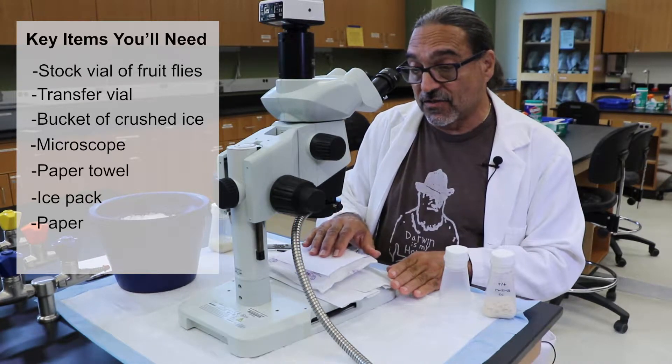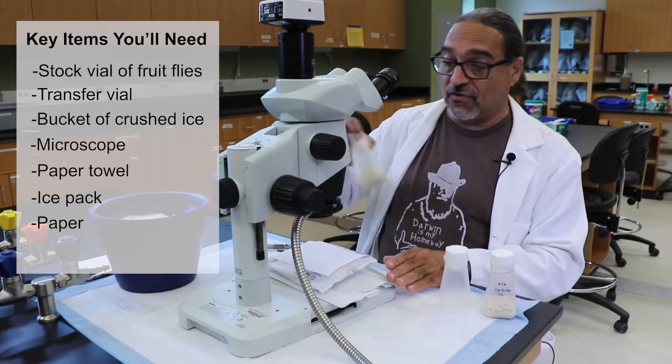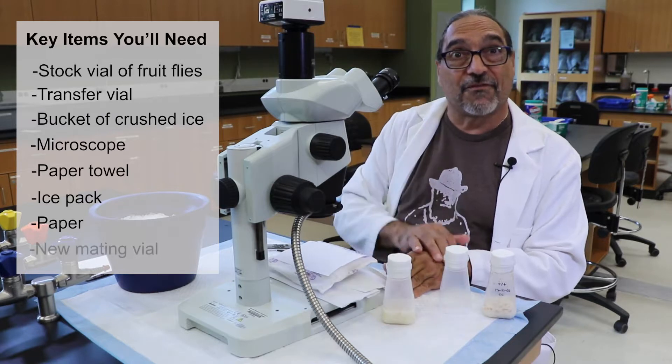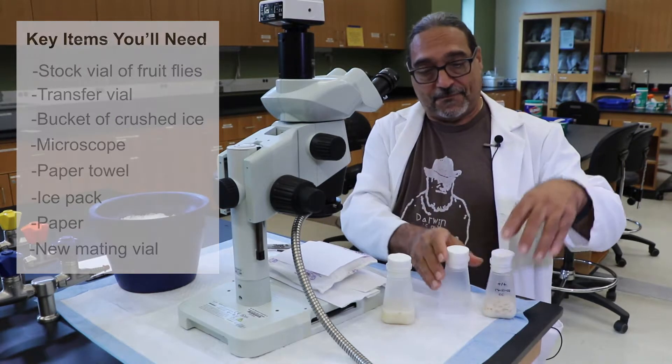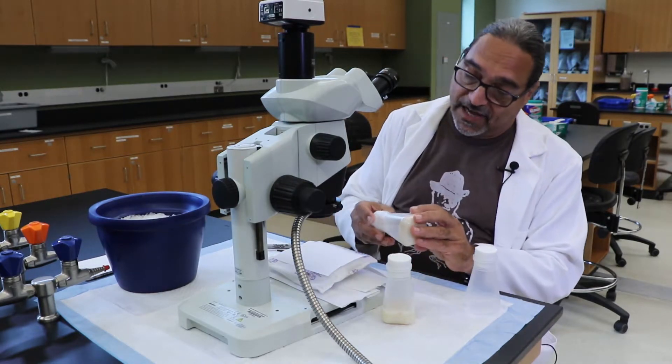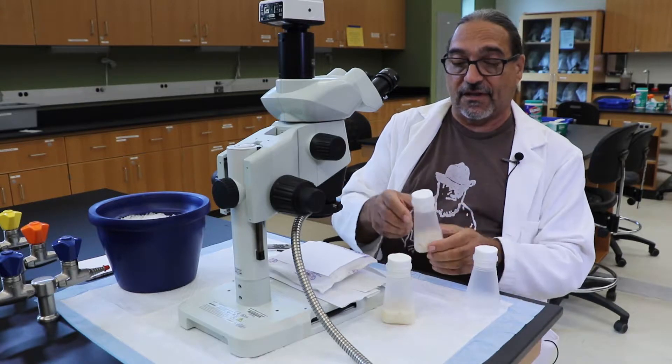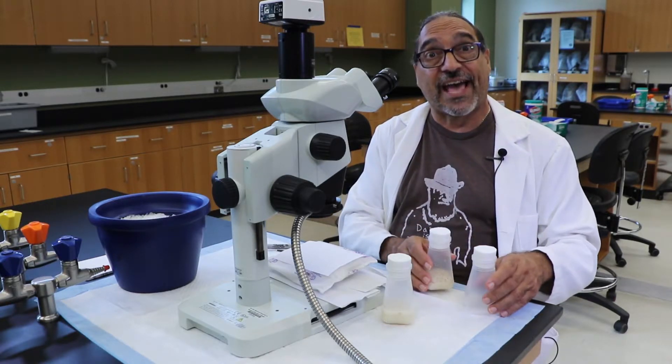And then be able to put them into the new mating vial. So let's begin. In order to get the flies, if you notice, the flies all organize at the very top of the vial. And that is because they are negatively geotaxic.